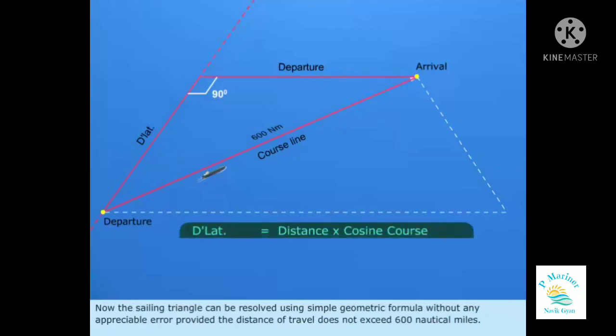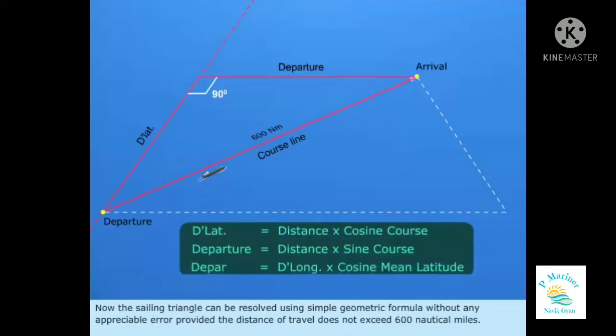The sailing triangle can be resolved using simple geometric formulas without any appreciable error, provided the distance of travel does not exceed 600 nautical miles.